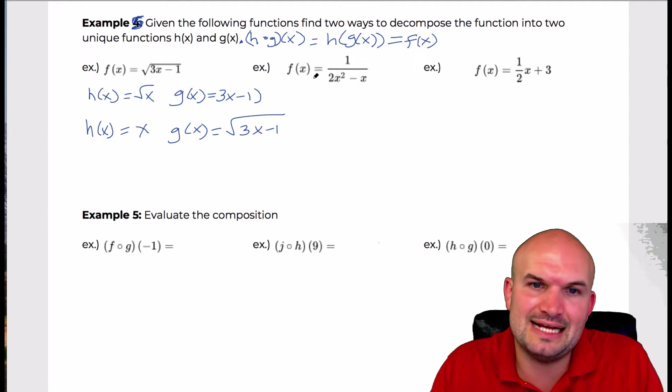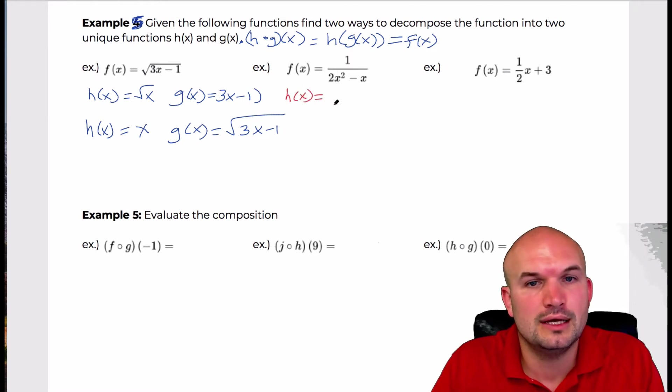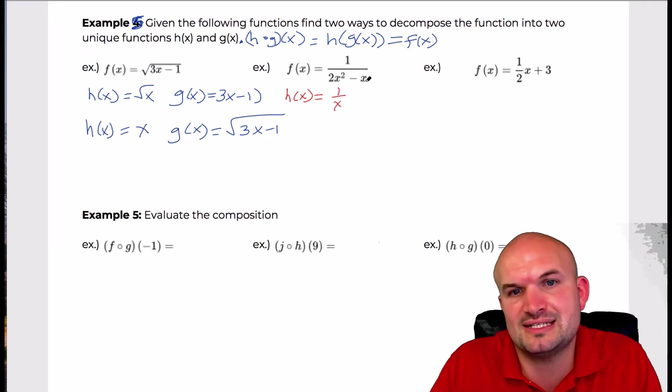So in this one, a non-creative way would just say, well, let's make h of x equal 1 over x. And then if I were to plug in 2x squared minus x in for my denominator, I would have f of x. So therefore, g of x is going to equal 2x squared minus x. Okay? So that's one example.